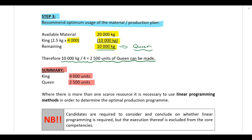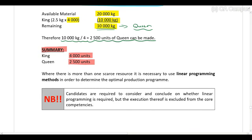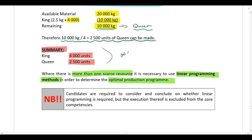To summarize: if a question gives you a limit on raw material, labor hours, or machine hours, work through three steps. First, calculate whether you actually have a scarce resource or constraint. Second, if you do have a limiting factor, calculate the contribution per limiting factor — per kilogram, per labor hour, or per machine hour — and rank the products. Third, recommend the optimal production plan. In this example we dealt with only one scarce resource. If there is more than one scarce resource, you would need to use linear programming.